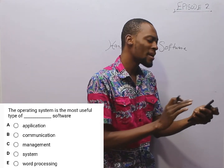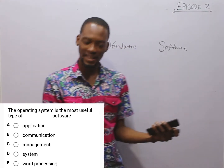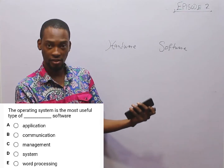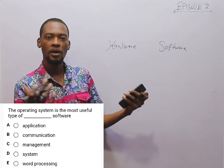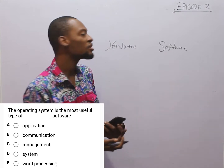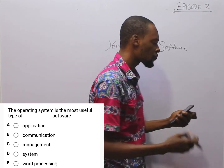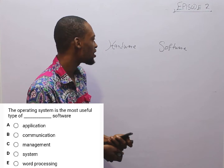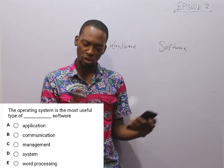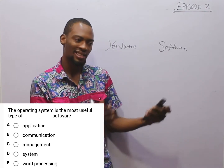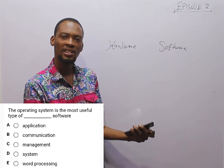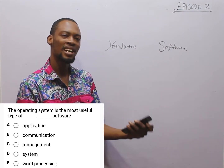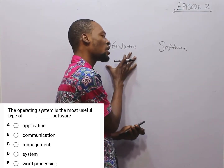Bringing out the result is done by the output devices: speakers, monitors, screens, and printers — those are output devices. Computer is divided into hardware and software. Hardware is the physical part of the computer — the screen you touch, the keyboard, the keys, the mic, speakers — all those are physical components of the computer. They are hardware.